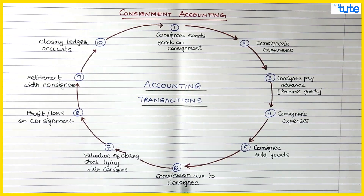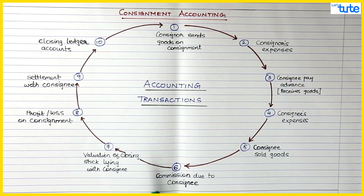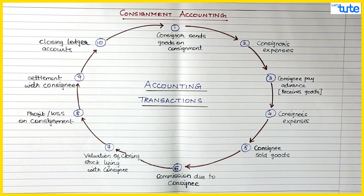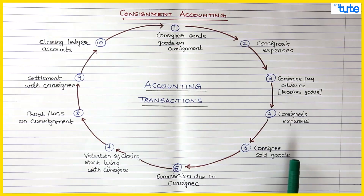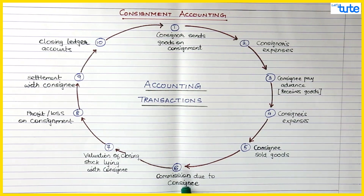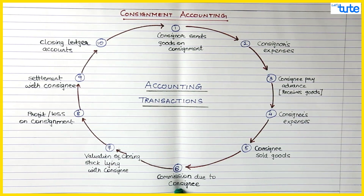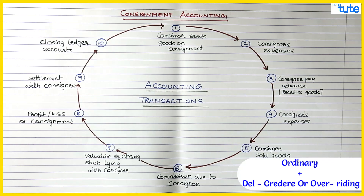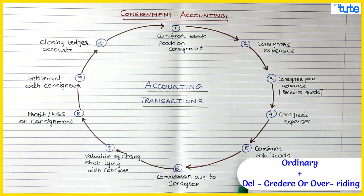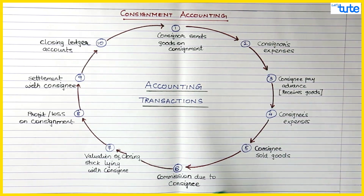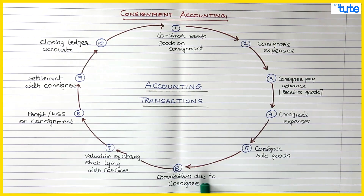After the sales, the consigner will have to pay commission to the consignee. So step six is: commission due to consignee. After the sales, you will pass the entry for the commission. Commission can be just ordinary commission, or there can be overriding commission as well — it depends on the question.